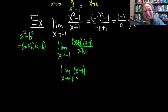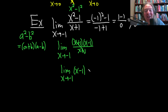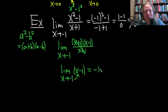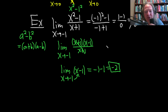We're left with the limit as x approaches negative one of x minus one. We're in a good place; we can plug in the number. Drop the limit sign, plug in negative one: we get negative one minus one, so we get negative two. And now we're really doing calculus.